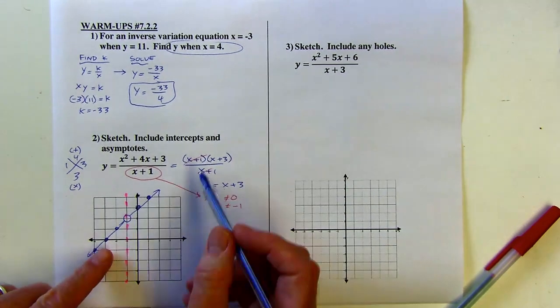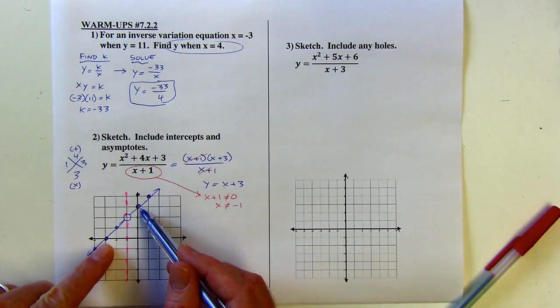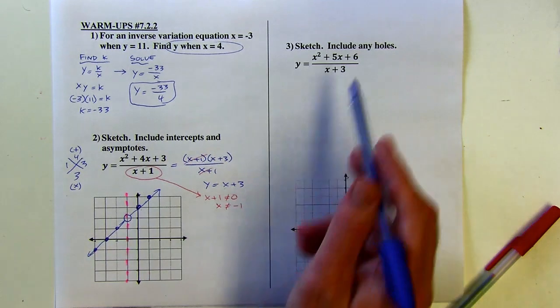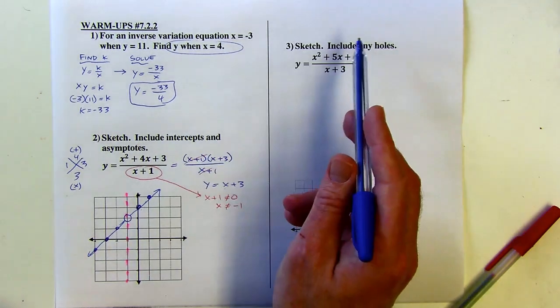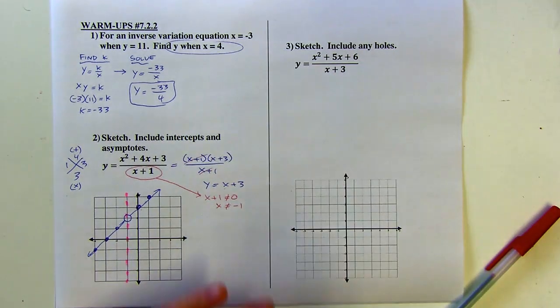So this is going to be a straight line with a hole in it. So the intercepts, it said include them. Well, they're graphed right there. There's my x and y intercepts. I think I meant to just say include any holes in the directions. I'll fix that later.